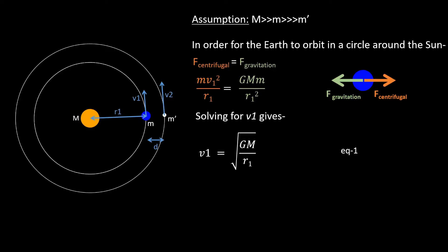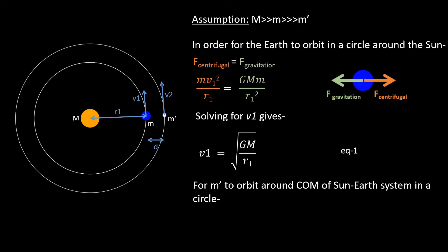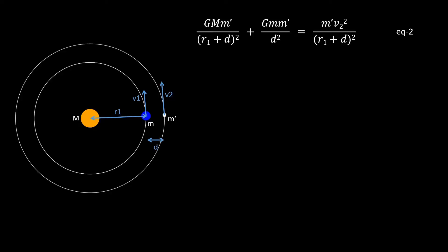Now, for the satellite to orbit the center of mass of the Sun-Earth system in a circle, the net gravitational force on it must equal the centrifugal force on it, which gives equation 2. On the left-hand side, the first term is the gravitational force exerted by the Sun on the satellite, and the second term is the gravitational force exerted by the Earth on the satellite. On the right-hand side, it is the centrifugal force acting on the satellite in the outward direction, where in the denominator, r1 + d is the distance of the satellite to the center of mass of the two-body system — essentially the center of the Sun.